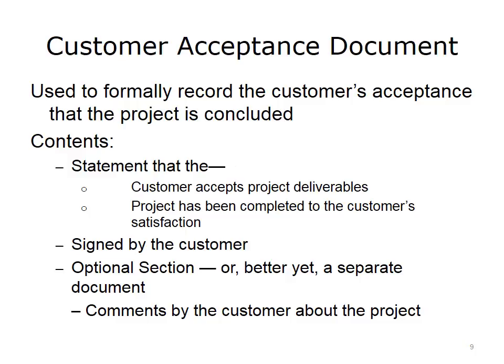As part of the customer acceptance process, focus attention on a customer acceptance document — a formal document marking the customer's acknowledgement that the project is completed satisfactorily and deliverables are acceptable. Such a signed acceptance can be very helpful in case there are questions later about whether the project satisfied the customer. This document may include an optional section for customer comments or suggestions for improvement in the spirit of continuous improvement. A preferred arrangement is to keep optional elements such as comments or suggestions separate from the formal acceptance document.